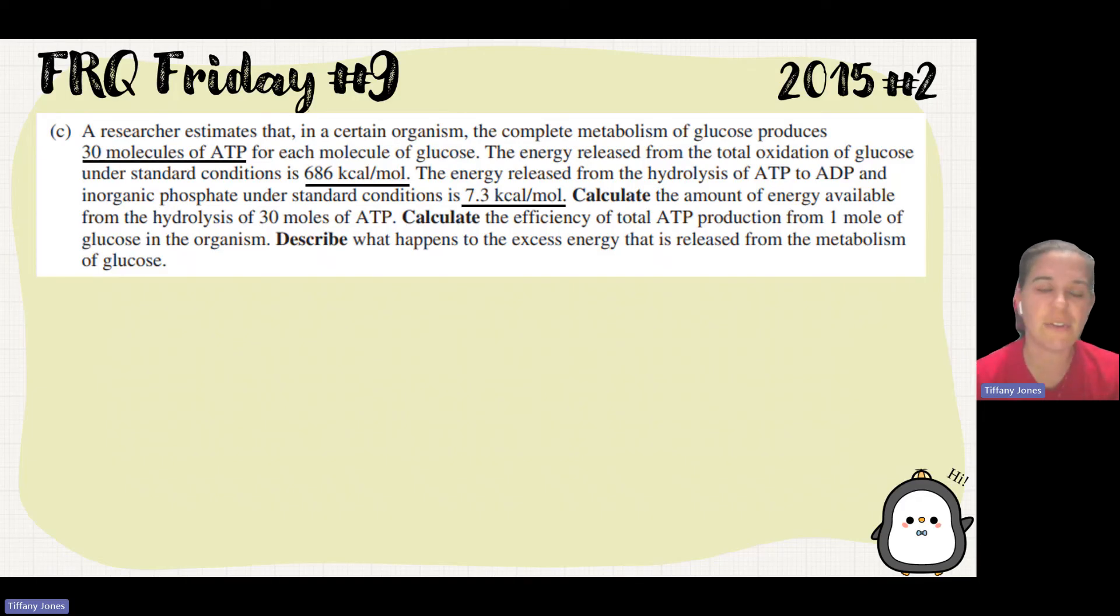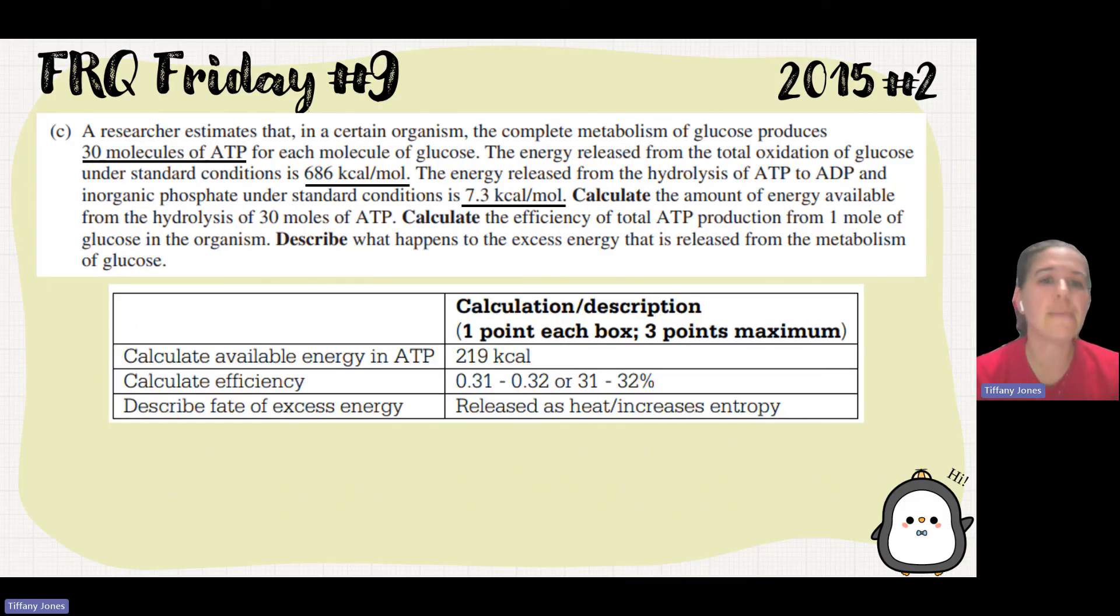We want to calculate the amount of energy available from the hydrolysis of 30 moles of ATP. If I know that a mole is 7.3 kilocals and I need to calculate the total amount of energy, I just multiply. So 30 times 7.3 is going to give me 219 kilocals.